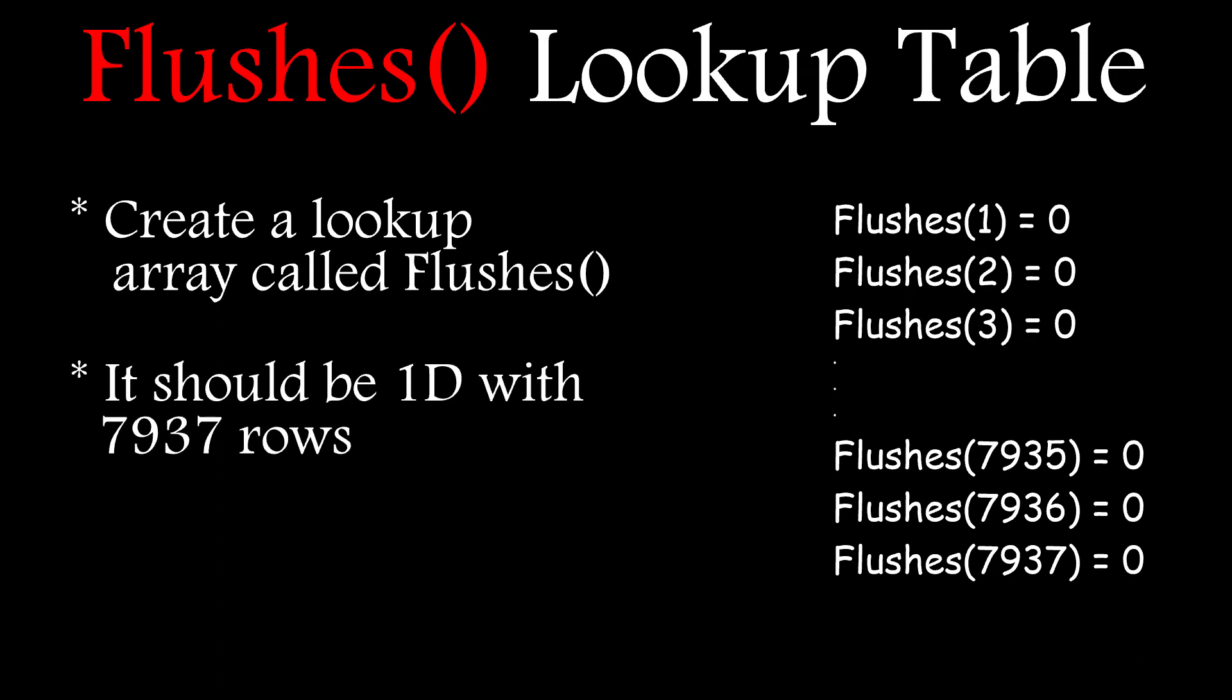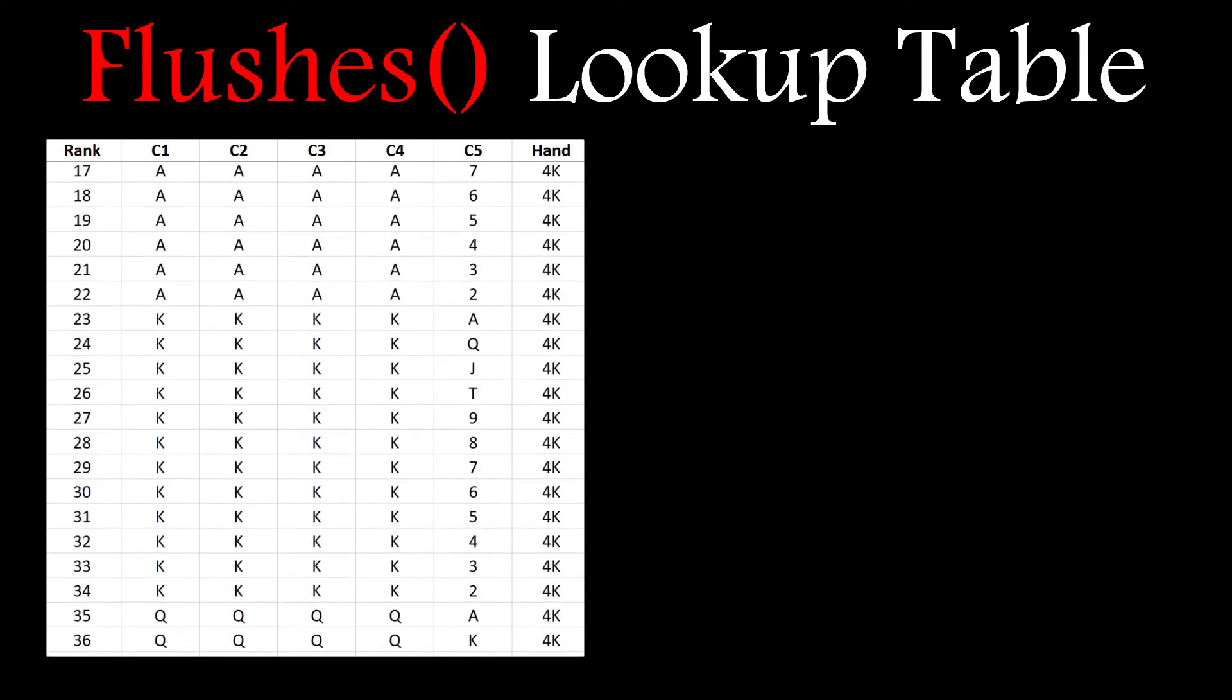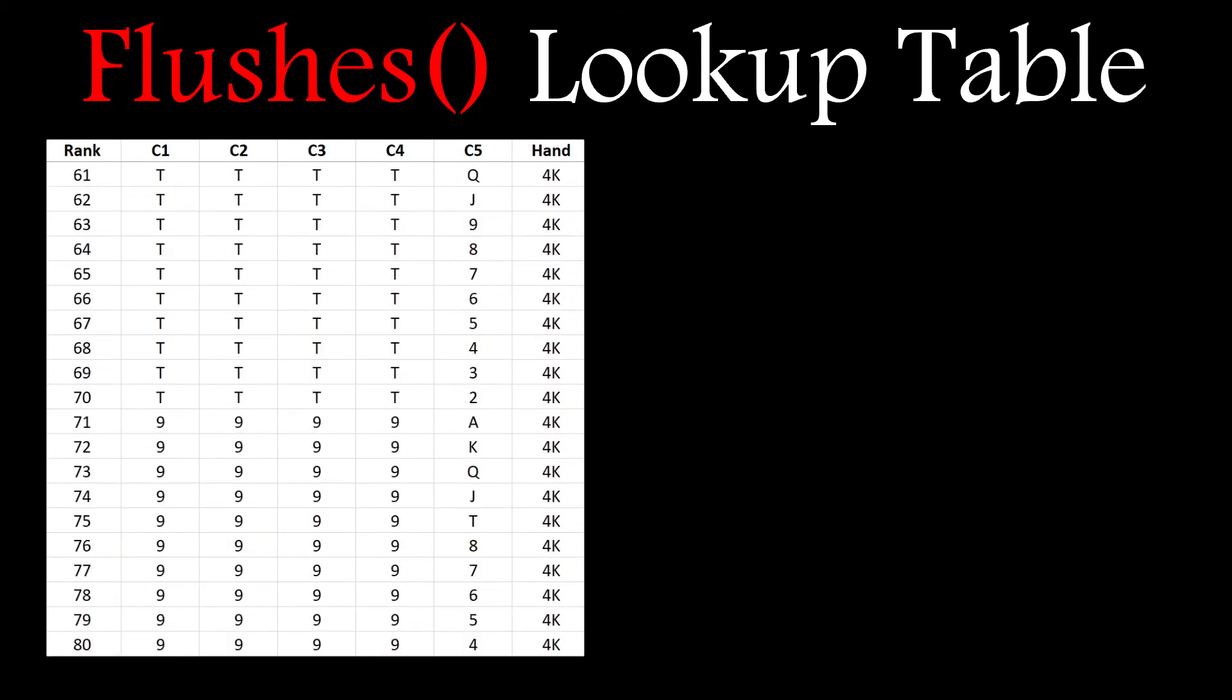So let's build our flush lookup table. We'll need an array with 7,937 rows and I'll populate it with zeros to start. Next let's grab that table and scan down through it looking for all the flushes and straight flushes. When we find one we'll need to extract the array index from the cards that make up the hand.